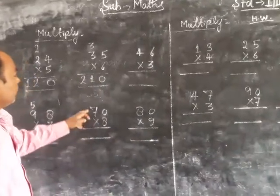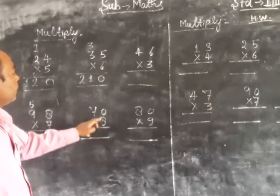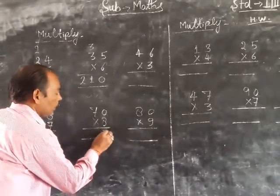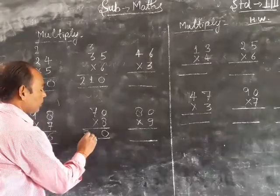Next, 70 x 8. 8 x 0 is 0. 8 x 7 is 56. Answer: 560.